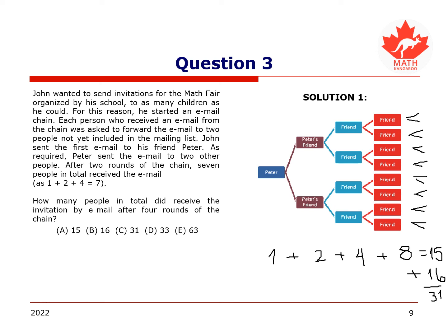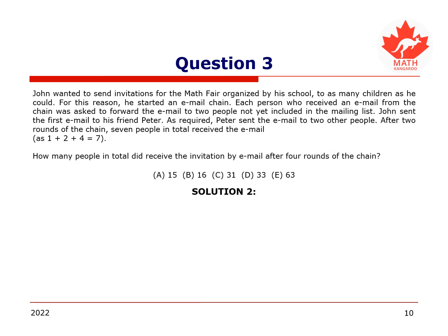Hence, a total of 31 people will receive an email invitation after four rounds. This number does include Peter. Here is the second solution. By understanding the pattern, the number of people who receive an email in each round is twice the number from the preceding round. Thus we have the sequence 1, 2, 4, 8, and so on. To calculate the number of people after the fourth round, we add the first five numbers: 1 plus 2 plus 4 plus 8 plus 16 equals 31. Hence, the number of people in total that received an invitation by email after four rounds is C, 31.